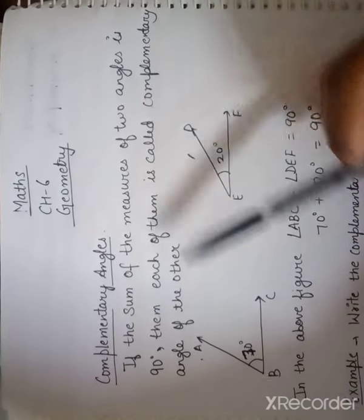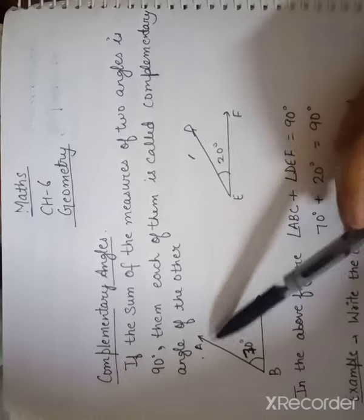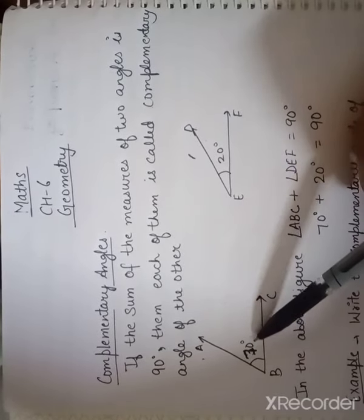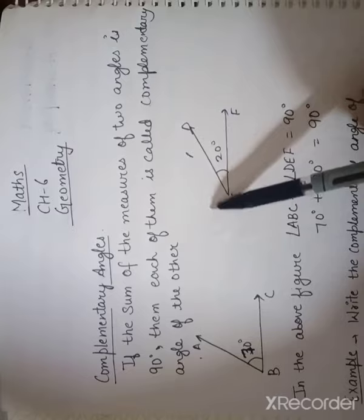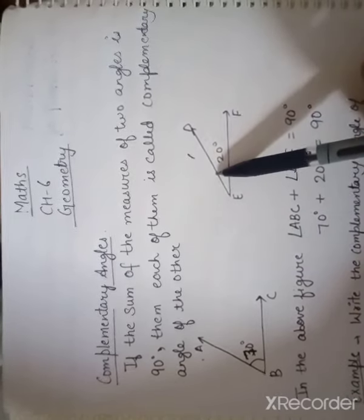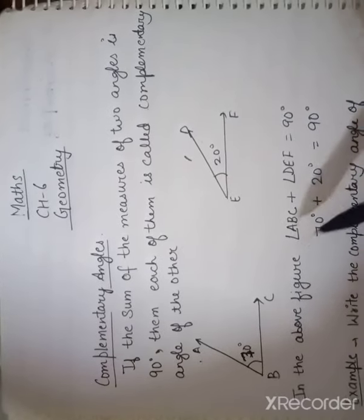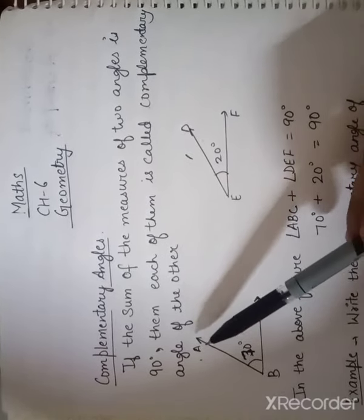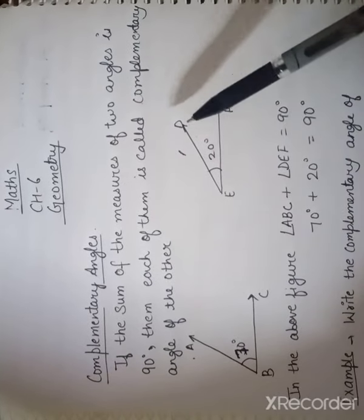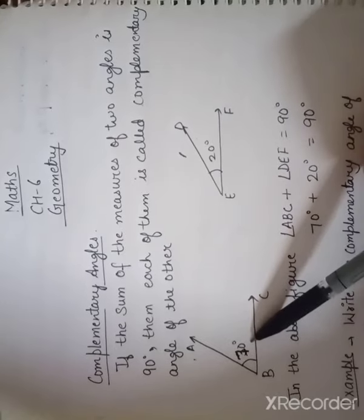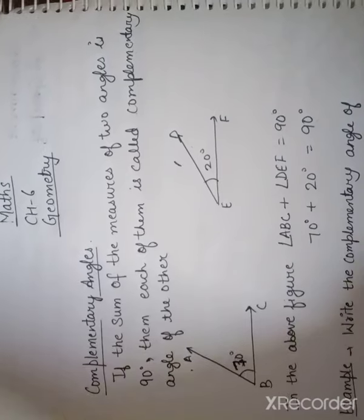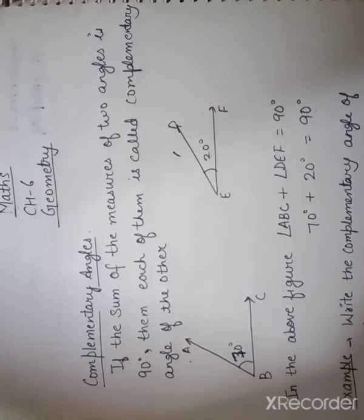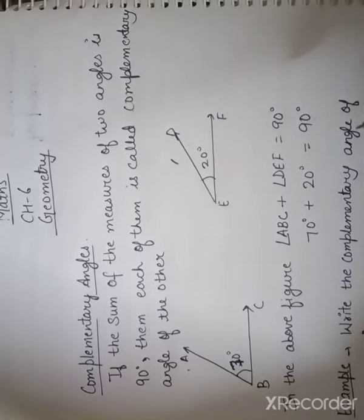If sum of the measure of two angles — see in the diagram. See the figure ABC. The angle ABC is equal to 70 degrees. The angle DEF is equal to 20 degrees. If we add these two angles, the sum is equal to 90 degrees. So we can say that angle ABC and angle DEF are complementary to each other.